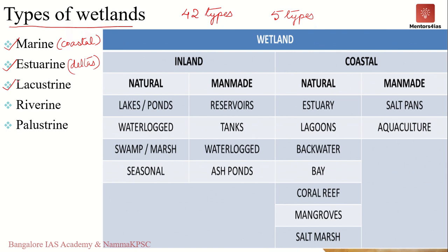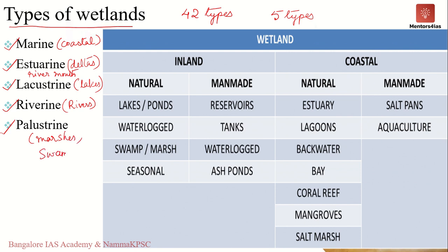The third type is lacustrine wetlands, associated with lakes — wetlands found along large lake water bodies. The fourth is riverine wetlands, found along rivers and streams. If the wetland is found along the mouth of the river it is estuarine, but if found along the natural flow or path of the river it is riverine. Finally, we also have palustrine wetlands — marshes, swamps or bogs — and in addition to these we can also have man-made wetlands.